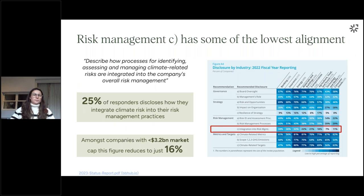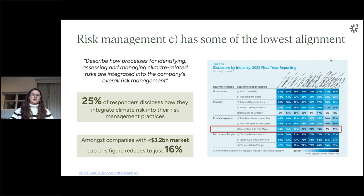Findings from the latest TCFD status report show that risk management disclosure element C has the second lowest rate of alignment amongst respondents across all sectors. It's not surprising given that 75% of companies surveyed indicated that risk management recommendations are somewhat or very difficult to implement. Risk management C refers to the integration of climate risk into a company's broader risk management practice. Yet only 25% of respondents were able to adequately describe how their processes for identifying, assessing and managing climate-related risks are integrated into overall risk management. This figure reduces to just 16% for companies with less than $3.2 billion market capitalisation.